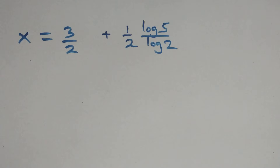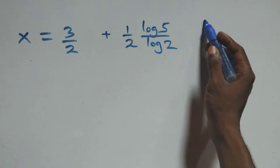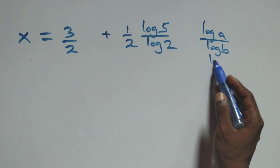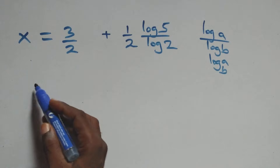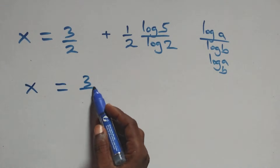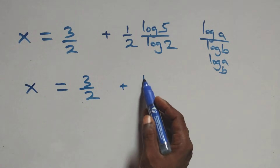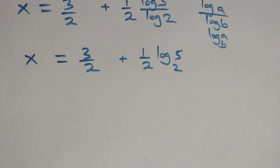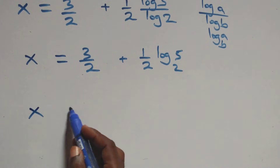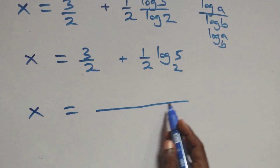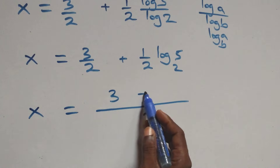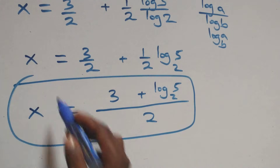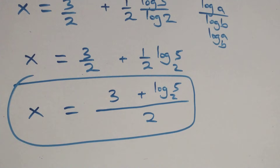We write that as 3 over 2, and plus 1 over 2 log 5 over log 2. Then next step here, we apply change of base. When we have log A over log B, we can write this as log A to base B. All we have becomes x equals to 3 over 2 plus 1 over 2 log 5 base 2. Bringing this together as one fraction, we have x equals to 3 plus log 5 base 2, all over 2.